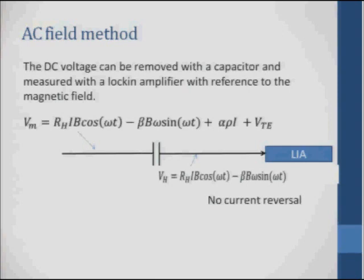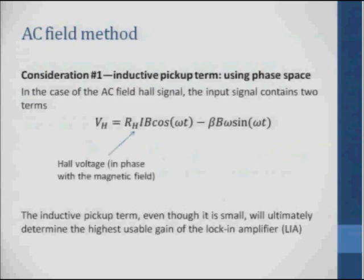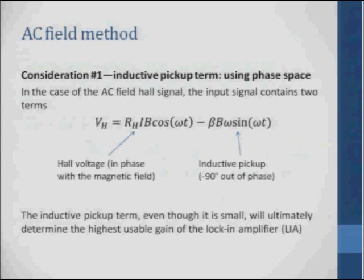This goes into a lock-in amplifier to measure these two terms. We use a lock-in amplifier because we can use phase-sensitive detection to separate the Hall voltage, which is in phase with the magnetic field, from the inductive pickup, which is 90 degrees out of phase. If you properly phase your lock-in to the phase of the magnetic field, then your X channel would read the Hall voltage and your Y channel would read the inductive pickup. This inductive term is usually small, but it's always there.